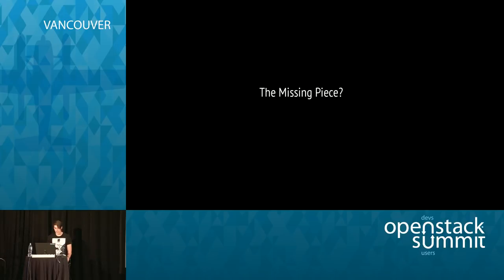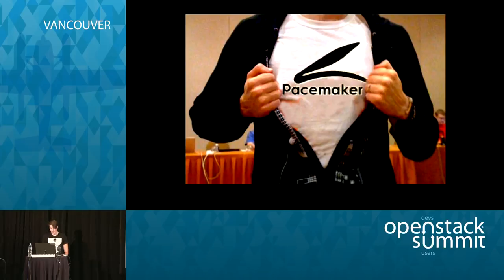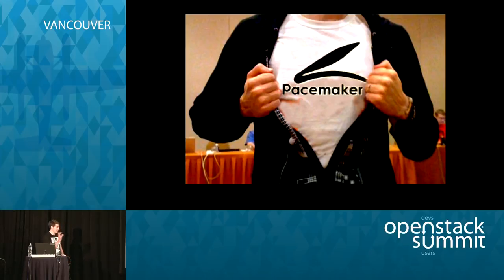Everyone hung their head in shame. They couldn't figure out where they'd gone wrong. They had a distributed self-replicating database with fault tolerance built in, they had redundant load balancing, but they're still having data consistency issues. So how do we fix this? For us, the solution was Pacemaker. Pacemaker handles prevention of split partitions very well — it's native to how Pacemaker works.